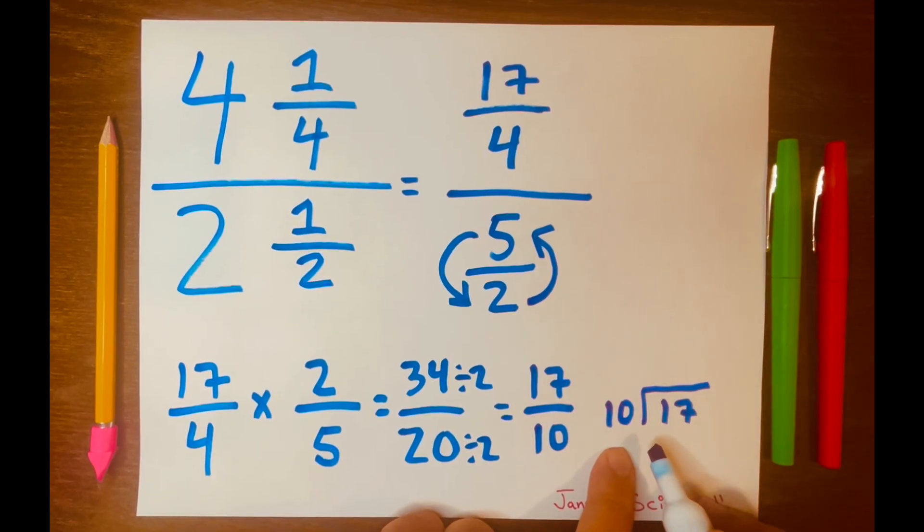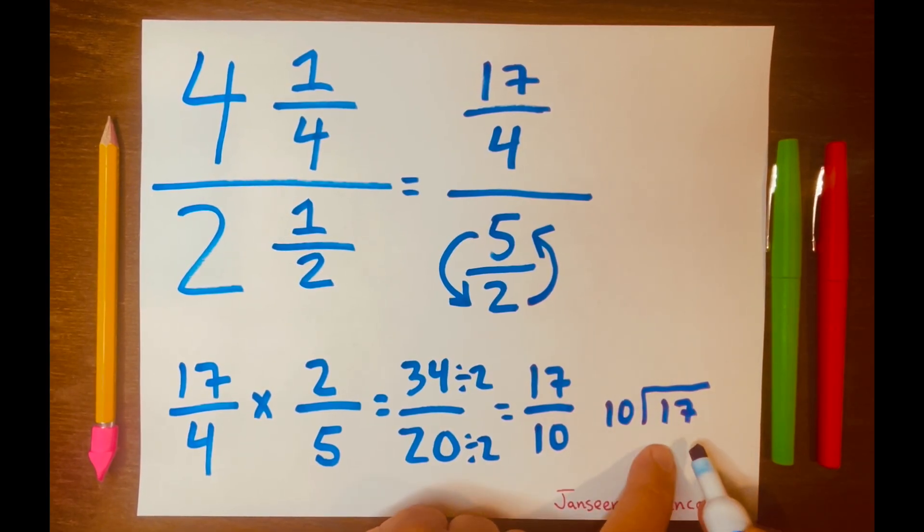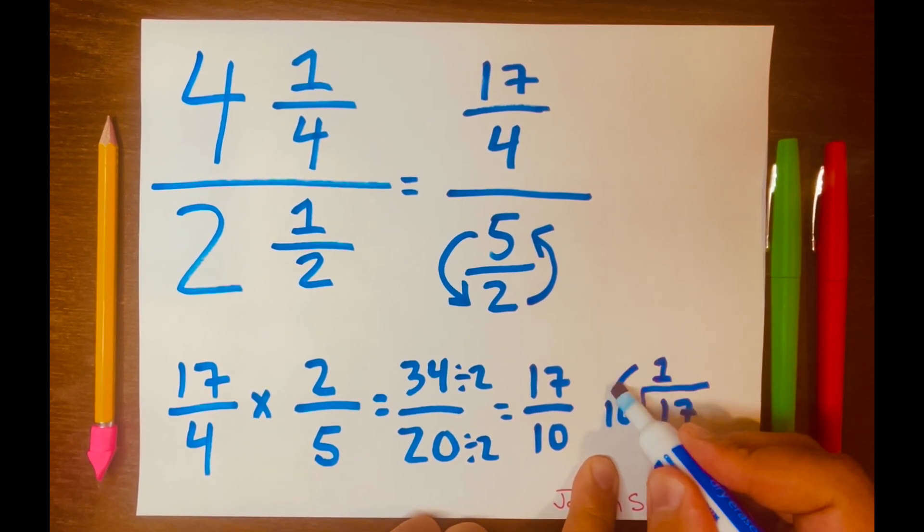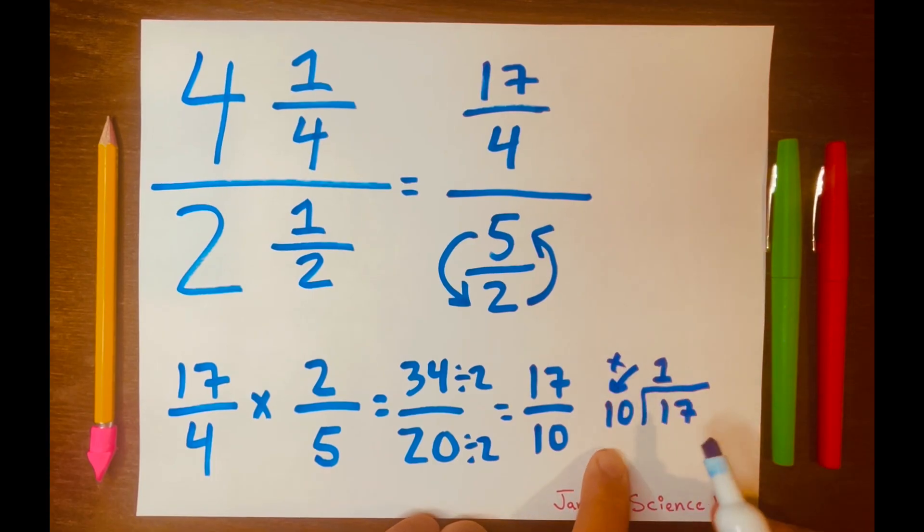And now let's go ahead and see how many times can 10 fit into 17. So 17, 1 times, and then 1 times 10 is 10. And then we subtract 17 minus 10 is 7.